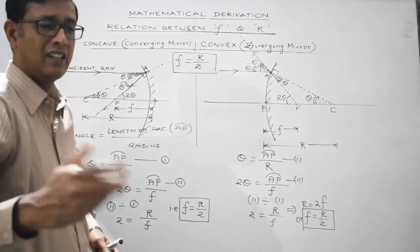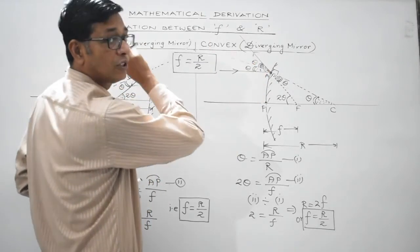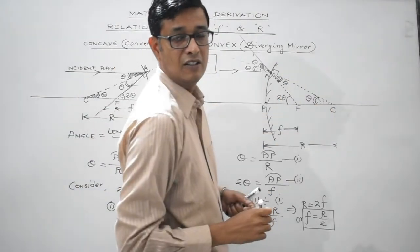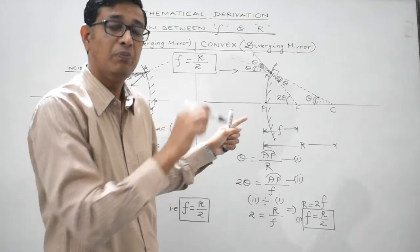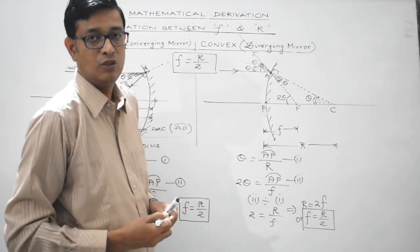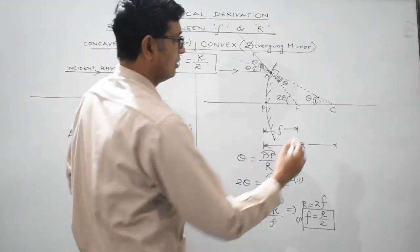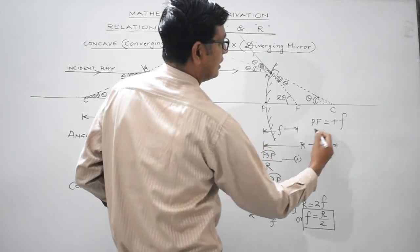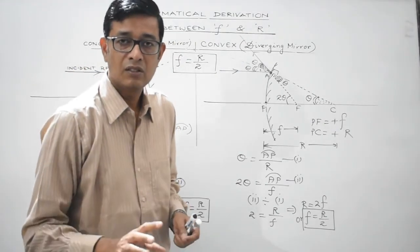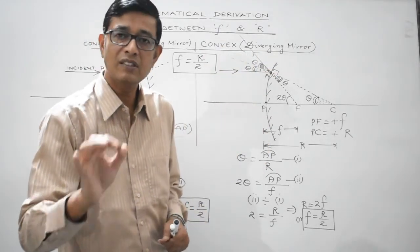Now applying sign convention: the incident ray travels from left to right, and PF and PC are also measured from left to right. Whenever a distance from the pole is measured along the direction of the incident ray, it is assigned a positive sign. So for a convex mirror, PF and PC are both positive. Students, always remember: the focal length and radius of curvature of a convex or diverging mirror are always positive.